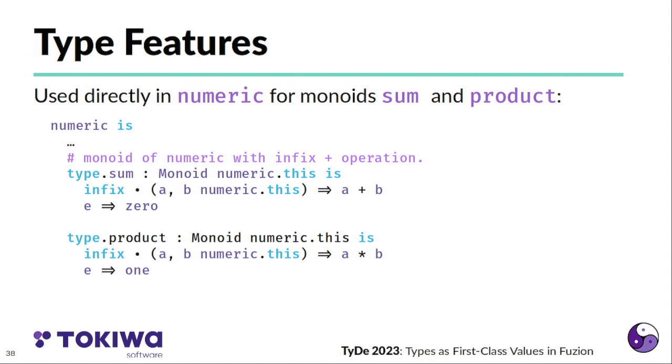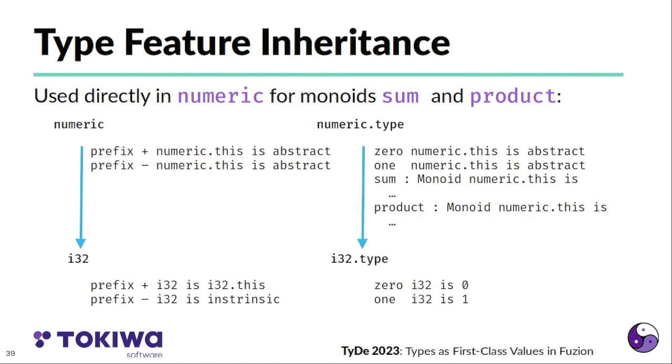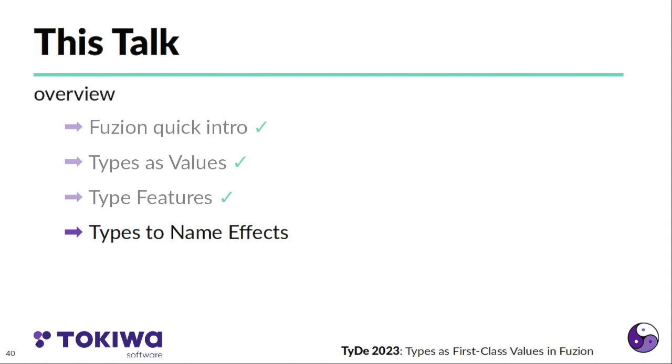And these kind of type features are used a lot within the standard library of Fuzion. For example, numeric defines monoids, sum and product for all numeric values that are based on the zero and one implementation. And that use as an operation, the plus and times operation as defined for the actual numeric type. And there's actually an inheritance structure of the type features that is parallel to the inheritance structure of the underlying feature. So numeric defines abstract features like plus or minus that are implemented by concrete implementation. And the corresponding type defines things like zero, one, sum and product that are implemented by the concrete type features.